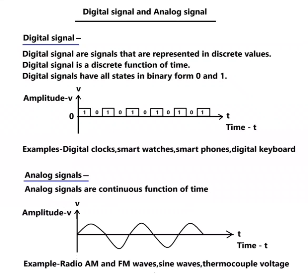Hello. Digital Signals and Analog Signals. Digital signals are signals that are represented in discrete values. Digital signals have all states in binary form, 0 and 1. A diagram is also given with amplitude voltage V with respect to time t. The signals have only two states, 0 and 1.